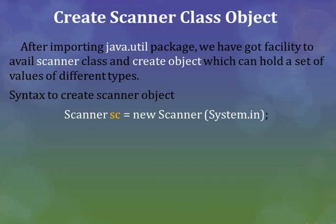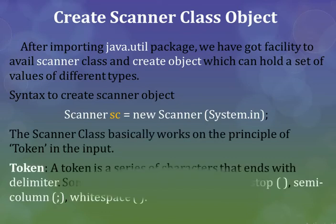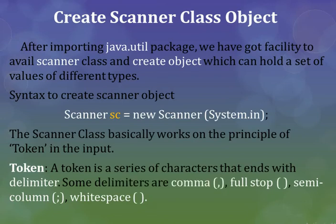The Scanner object is created as: sc = new Scanner(System.in). The Scanner class basically works on the principle of tokens in the input. What is a token? A token is a series of characters that ends with a delimiter. Some delimiters are comma, full stop, semicolon, and white space.